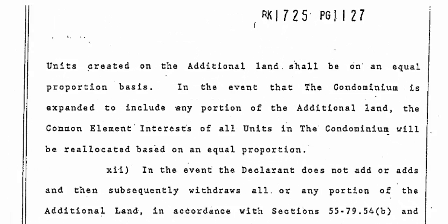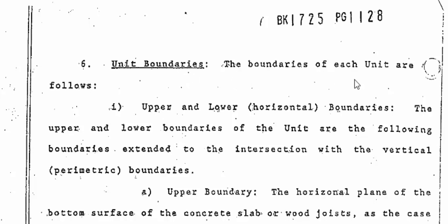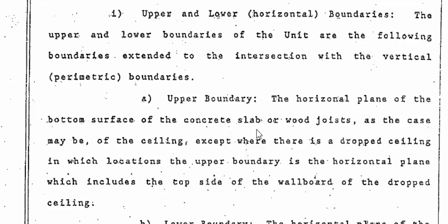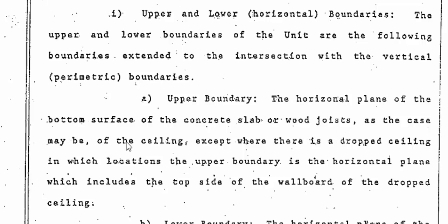And there it is — Unit Boundaries. The boundaries of each unit are as follows. The upper and lower horizontal boundaries: the upper and lower boundaries of the unit are the following boundaries extended to the intersection with the vertical perimetric boundaries. And what that means is simply your perimeter.